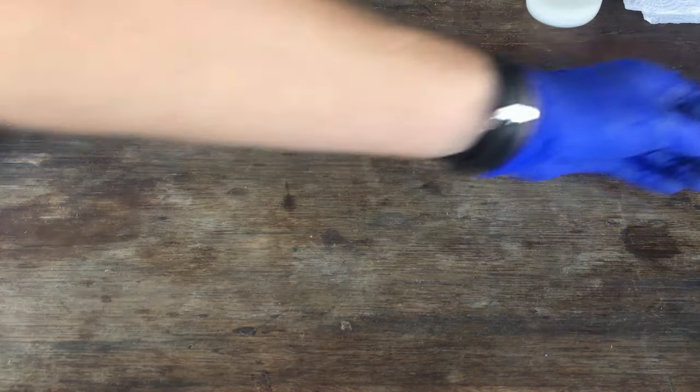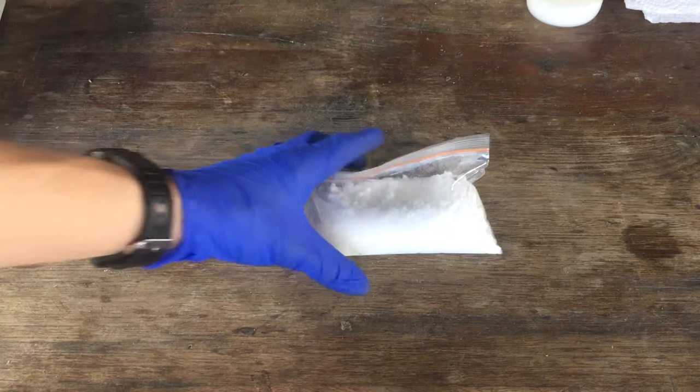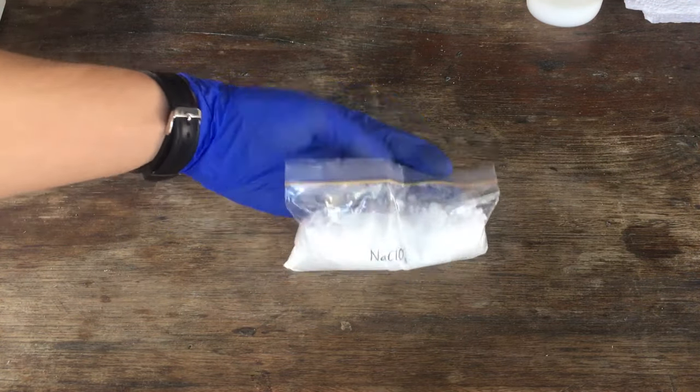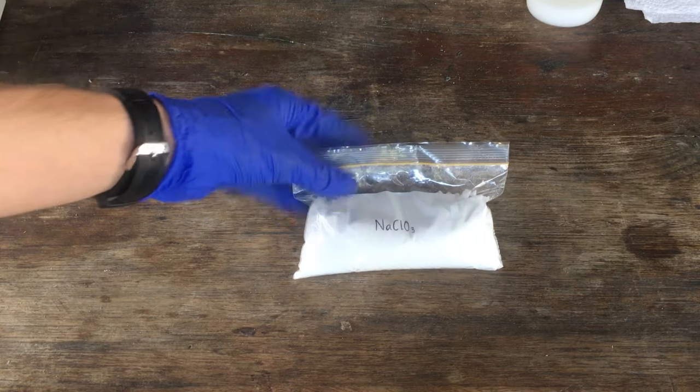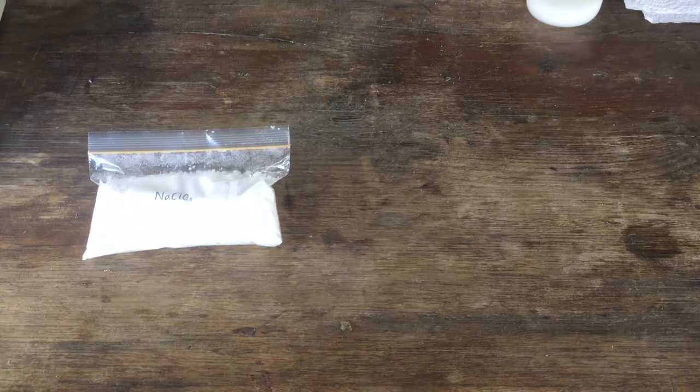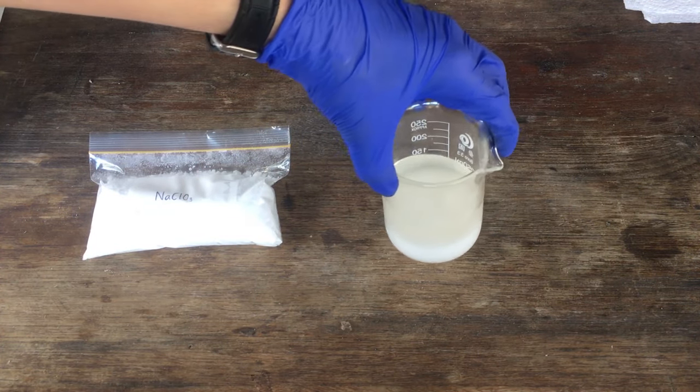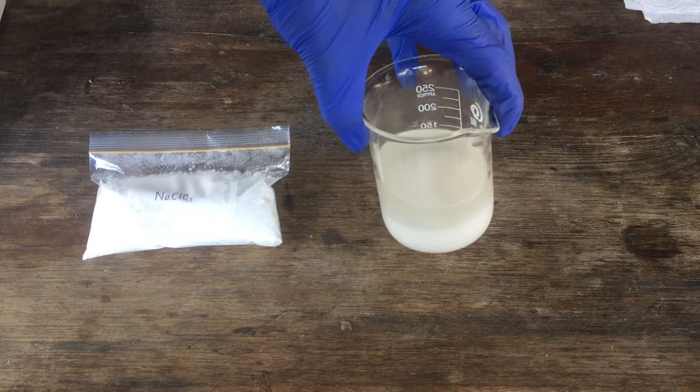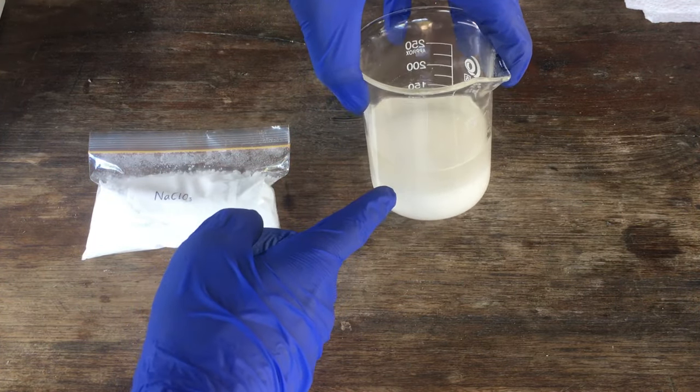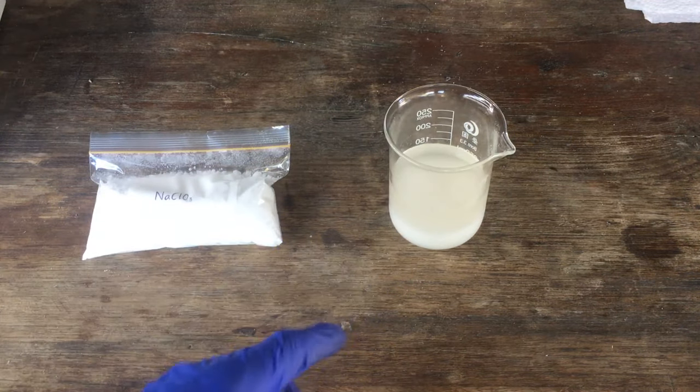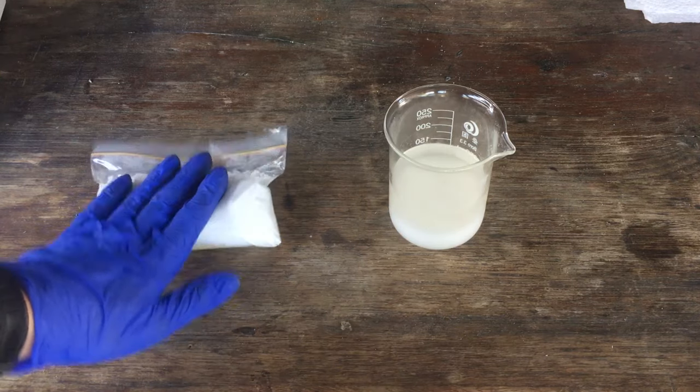After washing and drying our first crop of chlorate crystals, this is what we get. Now this is 245 grams of sodium chlorate that we got out of our first crystallization of our chlorate solution. We do have a bit of leftover solution that we decanted off the top, which I have gone ahead and boiled down a little bit in order to crystallize out some more crystals. And we have possibly another 60 grams in here. So I will go ahead and wash and dry these crystals and add them to our yield.